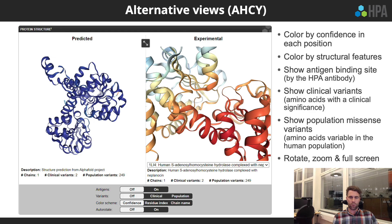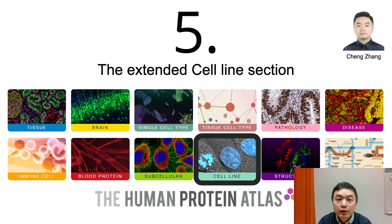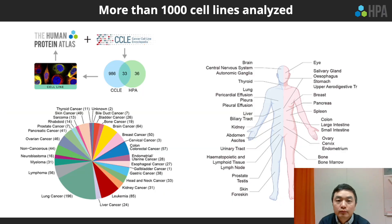The updated cell line section of the Human Protein Atlas has been extended into a separated section with much more information included. It now contains transcriptomic expression profiles for more than 1,000 cell lines collected from 35 sites in the human body and 26 different cancers. This allows exploration of whether a gene is enriched in a particular human cell line or cell line group derived from a specific cancer type.